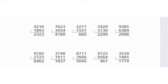Question 2: 7623 minus 3434. You will get 4189. Question 3: 2211 minus 1551. You will get 660. Question 4: 5429 minus 3130. You will get 2299. Question 5: 9385 minus 6389. You will get 2996. Similarly, students, you can see I have solved all the questions.